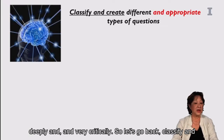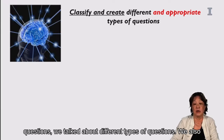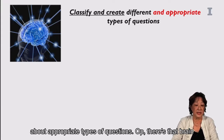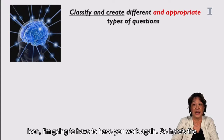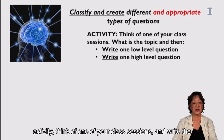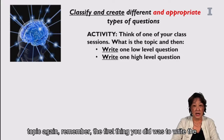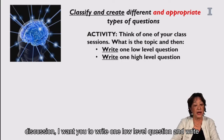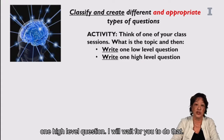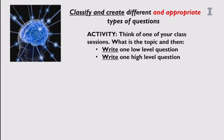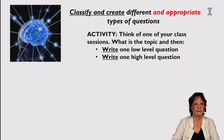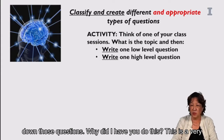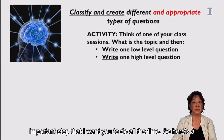Let's recap: we talked about opening questions, different types of questions, and different levels of questions. Now we need to think about appropriate types of questions. Here's another activity: think of one of your class sessions and write the topic again. Continuing from your discussion, I want you to write one low-level question and one high-level question. I will wait for you to do that. I said write down those questions — not just think about them — because this is a very important step I want you to do all the time.